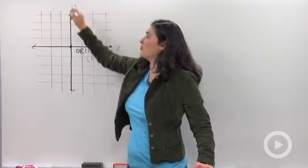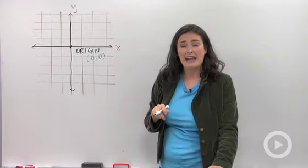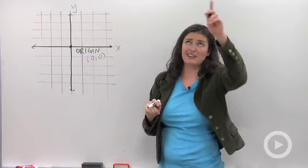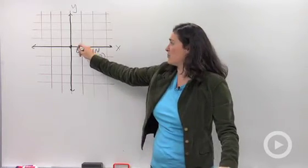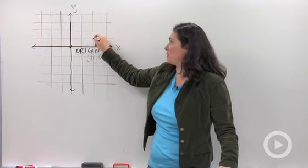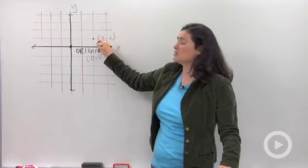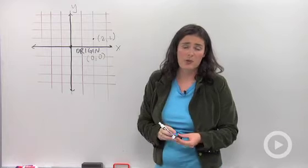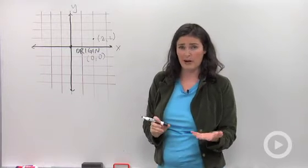And every dot, just like Descartes' fly, has two numbers. Over two, up one would be something that would look like that. Two is the x number, one is the y number. So that's important, how you get the points on there.